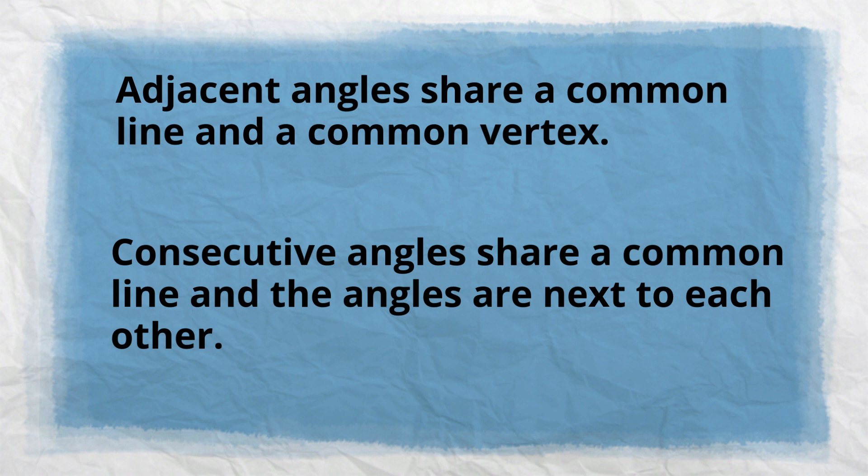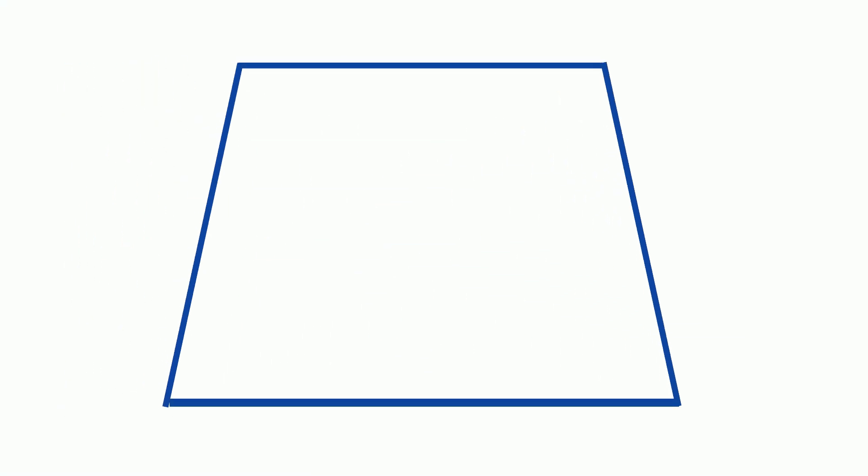Let's look at an example. Let's take a look at this trapezoid. Angles A and B are considered consecutive. Notice that they do share a common line, but the angles are next to each other.